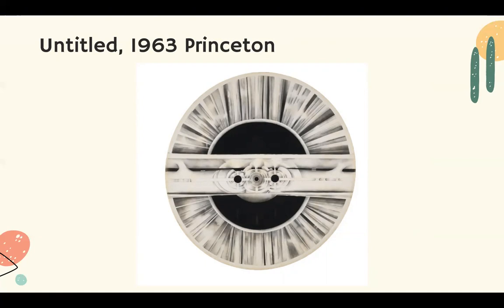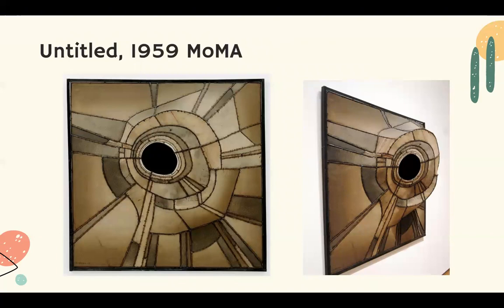Bontecou has many signature themes in her works. One especially interesting one is this cavity-like black hole, which is a signature motif for her in both her sculptures and her drawings. Here we see how it is reflected in her sculpture. This one is from 1959 and is also at the All Freedom in Every Sense exhibition at the Museum of Modern Art. In this sculpture, we once again see the black hole at the almost central point of the work. It becomes a huge focal point, bringing the viewer's eye in and creating an unknown sense of depth. It creates a center of ominous ambiguity in the work.